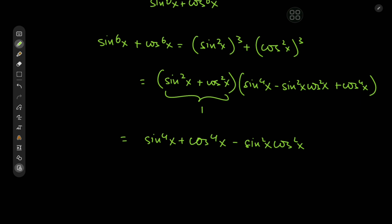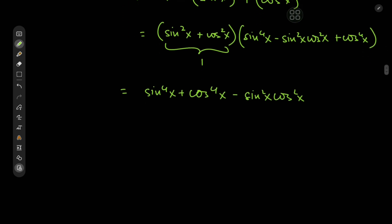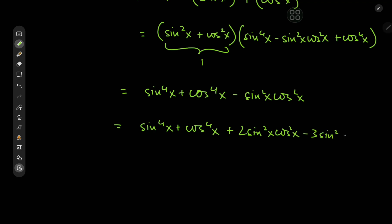It would be quite nice if we had a plus 2sin²x·cos²x term so we could complete the square. Getting that is not difficult — we write sin⁴x + cos⁴x + 2sin²x·cos²x, and to balance that out we need minus 3sin²x·cos²x.